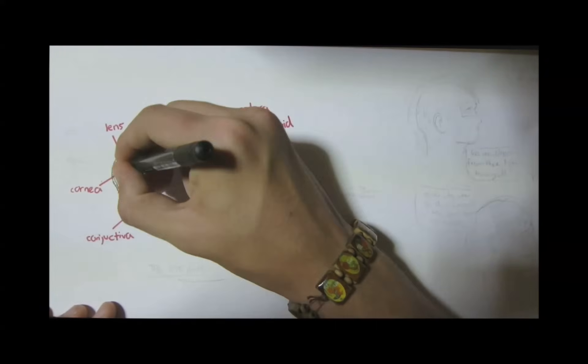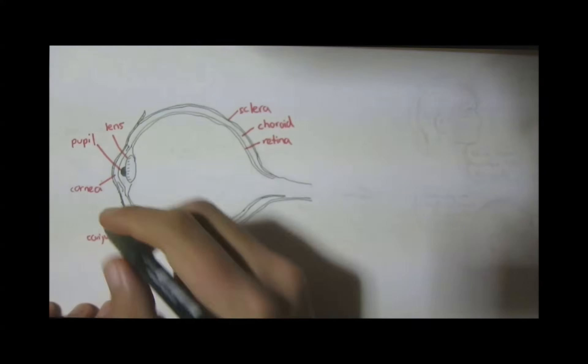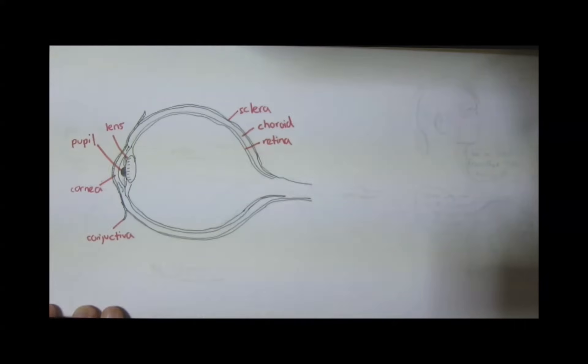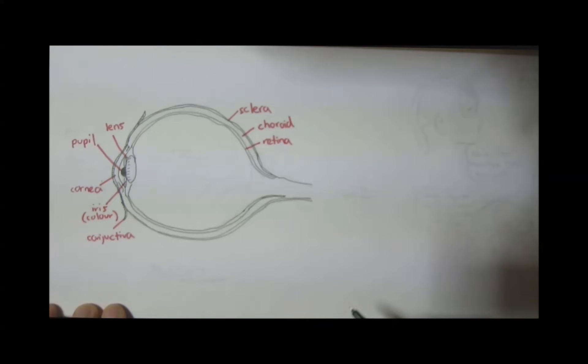The pupil is the main place which allows light to enter the retina. The iris, which controls the diameter and size of the pupils, as well as is responsible for our distinct eye color.